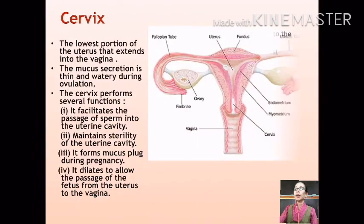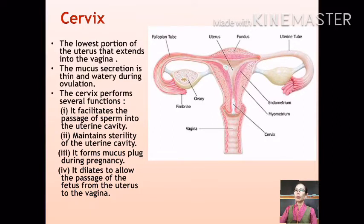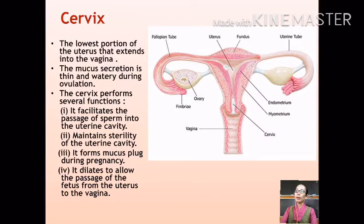The uterus is connected to the vagina at its lowest portion through the cervix. The cervix performs many functions: it keeps unwanted bacteria and viruses out of the uterus; it opens and closes to let sperm in and menstrual blood out; it produces its own lubrication or mucus; and it can even form a mucus plug during pregnancy to prevent premature delivery, while also being able to dilate to allow the baby to pass from the uterus to the vagina during delivery.